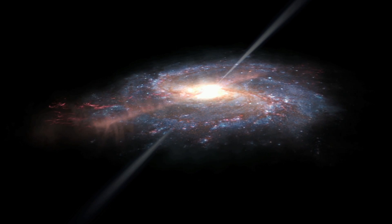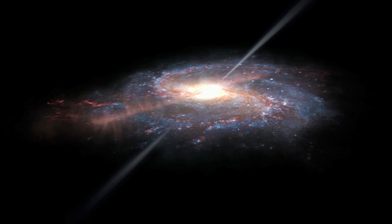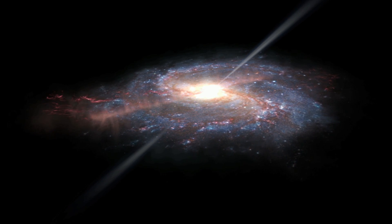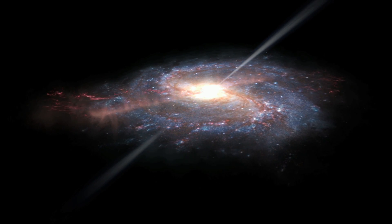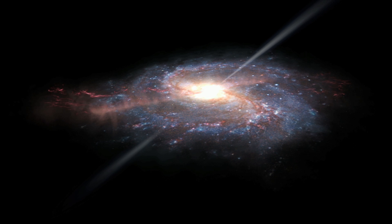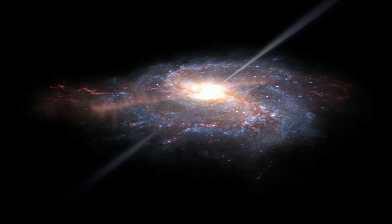The jets disrupt and heat up all the gas in their path, which in turn excites denser gas towards the center of the galaxy. This gas is tightly bound together, so it remains roughly straight.